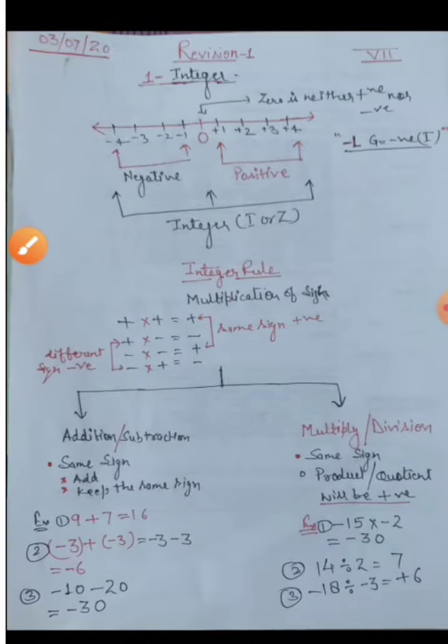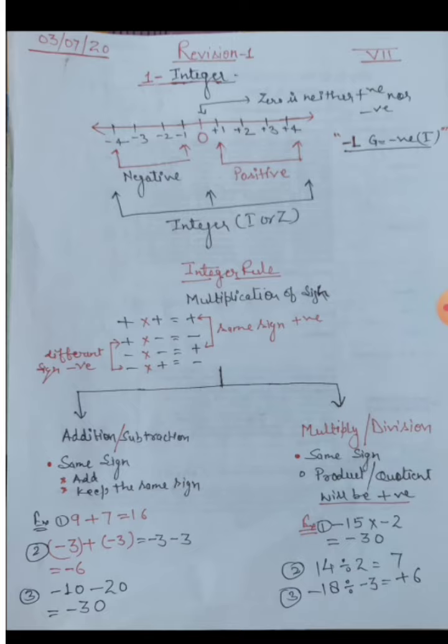First topic today is integer — what is an integer? Before integers, we have some types of numbers. We have natural numbers and whole numbers. All counting numbers are known as natural numbers: one, two, three, and so on. When we include zero in the set of natural numbers, that is called the whole number.